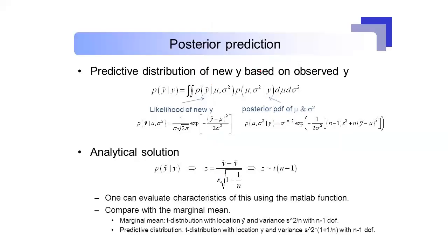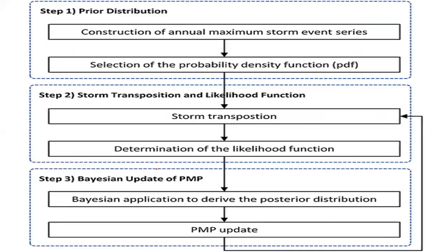Posterior prediction is defined as the prediction of y* based on observed y. The posterior predictive distribution is p(y* | y) = ∬ p(y* | μ, σ²) · p(μ, σ² | y) dμ dσ². By these formulas we find the predictive distribution and also its analytical solution.